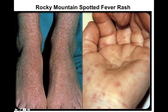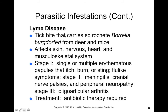Lyme disease is also transmitted by ticks — caused by a spirochete called Borrelia burgdorferi. It affects the skin, nervous system, heart, and musculoskeletal system. In the first stage, it causes erythematous papules that itch, burn, or sting, along with flu-like symptoms. Stage two is when it spreads to the brain, causing meningitis and cranial nerve palsies, also peripheral neuropathy. In stage three, it spreads to your joints causing oligoarticular arthritis due to inflammation within those joints. It's treated with long-term antibiotics required to eliminate this particular microorganism.